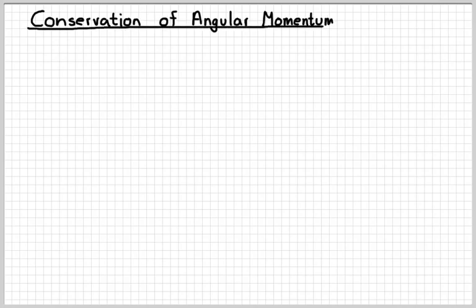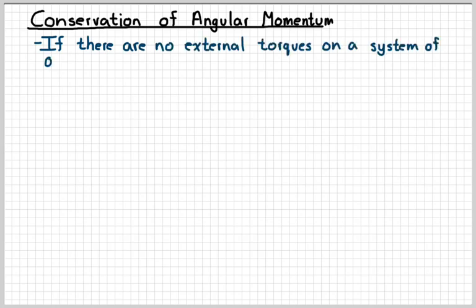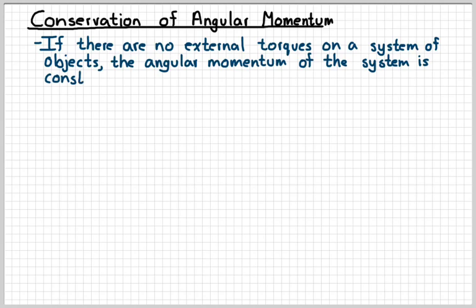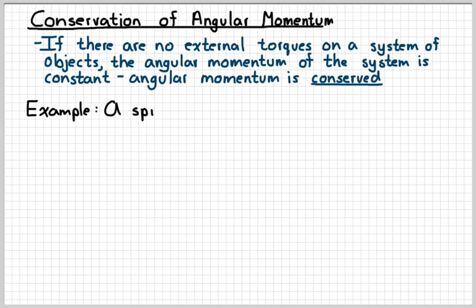Just like linear momentum, angular momentum is also conserved. That means it remains constant. Now the caveat is that there has to be no external torques on the system. So if you know that there's no external torques on a system, then the angular momentum of the system will be constant. Again, the fancy word for that is conserved.